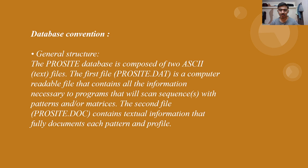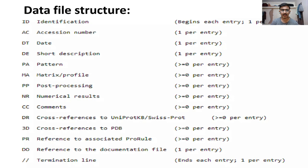The first file is prosite.dat — this file contains information about what kind of sequence it is, what kind of pattern trace exists, and what the pattern of the amino acids present in the protein is. The second file is prosite.doc, which contains textual information — a full document describing the function, profile, and how it will be helpful.